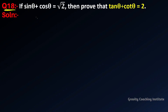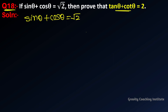Question number 18: if sin θ + cos θ = √2, then prove that tan θ + cot θ = 2. We are given sin θ + cos θ = √2, and we will prove that tan θ + cot θ = 2. We will start by squaring both sides.